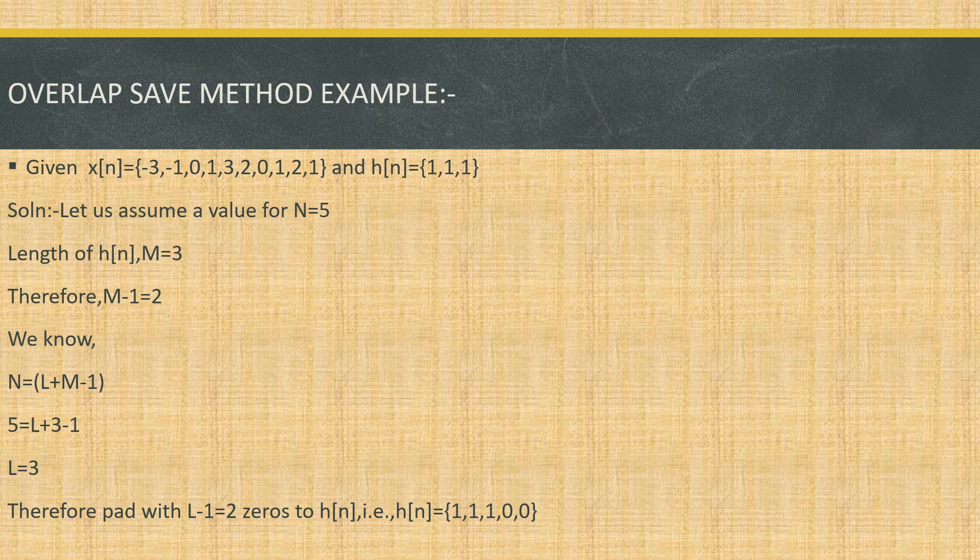The next step is determining the length of our input signal sequence. We assume N = 5. Then we determine the length of new data L. Since N = L + M - 1, substituting gives L = 3. For zero padding the impulse response, since L = 3 and L-1 = 2, we add two zeros, so h(n) becomes {1, 1, 1, 0, 0}.